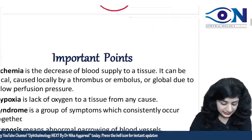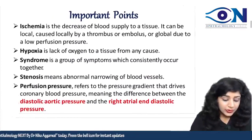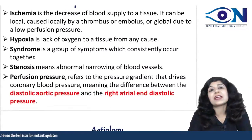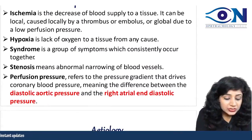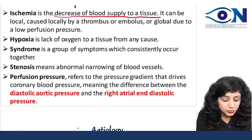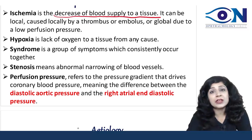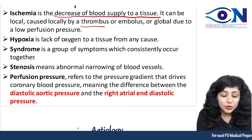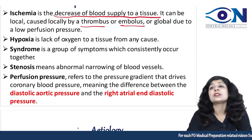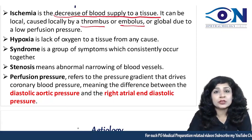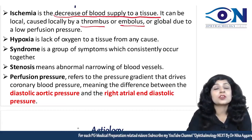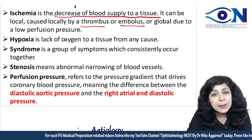Before going into details, some important definitions: ischemia is the decrease of blood supply to a tissue. It could be local — and the most important local cause is thromboembolism, which can occur even due to cholesterol crystals called atherosclerotic plaques.